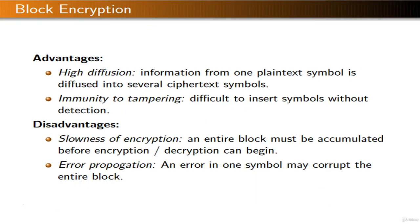Now let's consider the pros and cons of block ciphers. An advantage is high diffusion — information from one plaintext symbol is diffused into several ciphertext symbols. Another advantage is immunity to tampering; it's difficult to insert symbols without detection. One disadvantage is the slowness of encryption, as an entire block must be accumulated before encryption or decryption can begin. The other disadvantage is error propagation — an error in one symbol may corrupt the entire block.